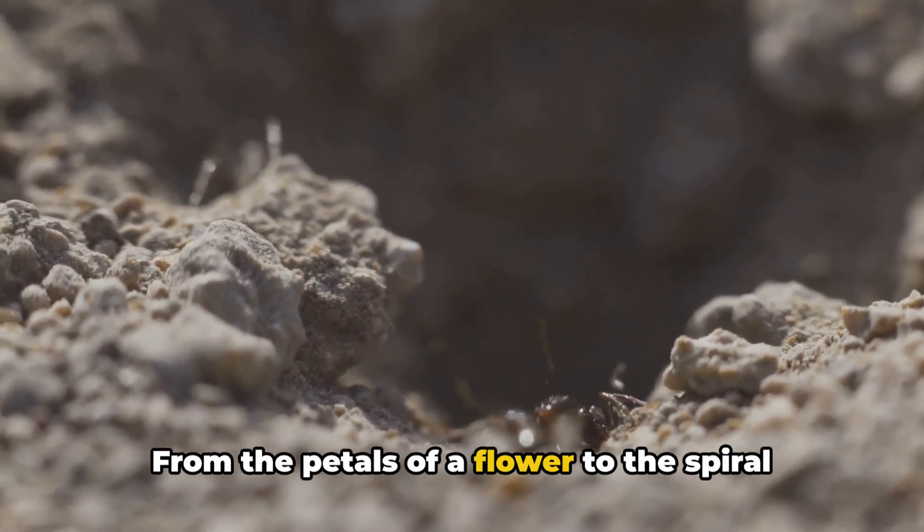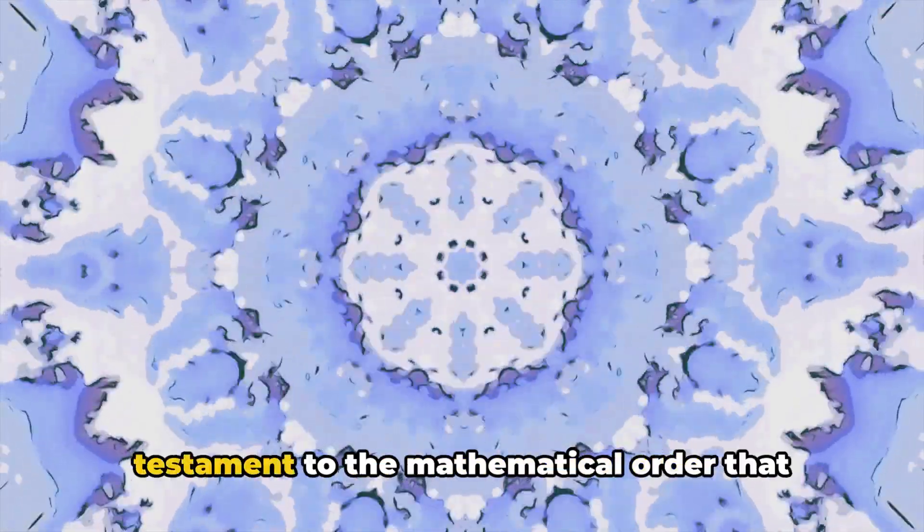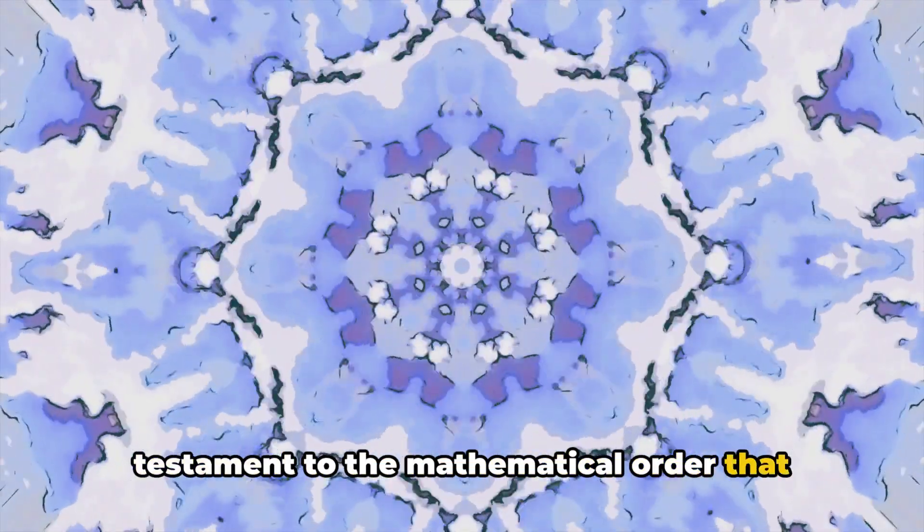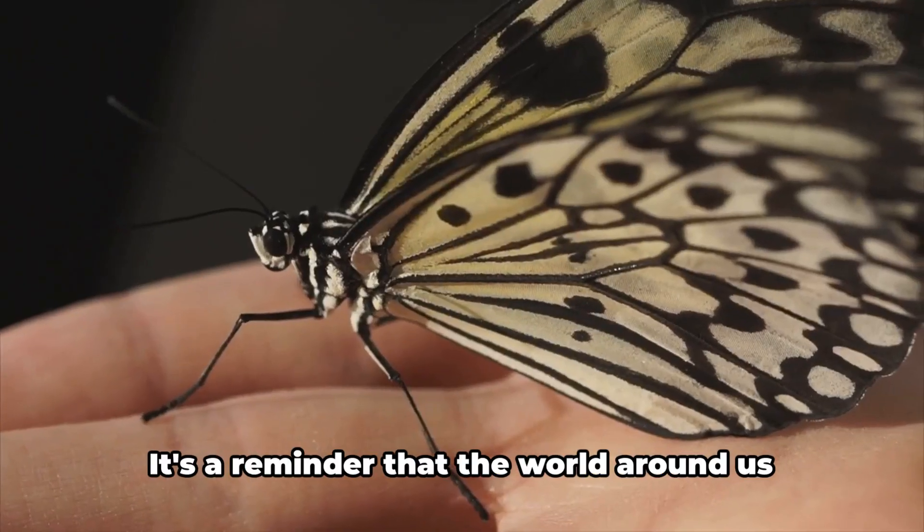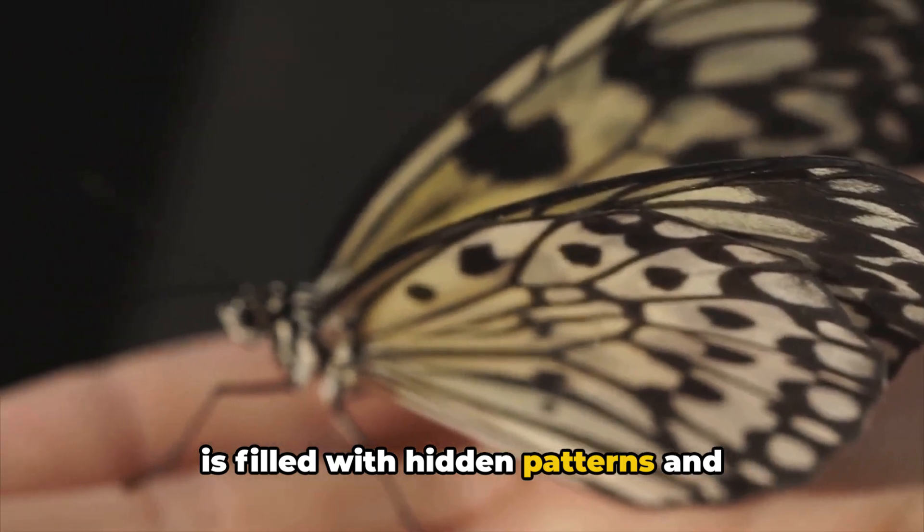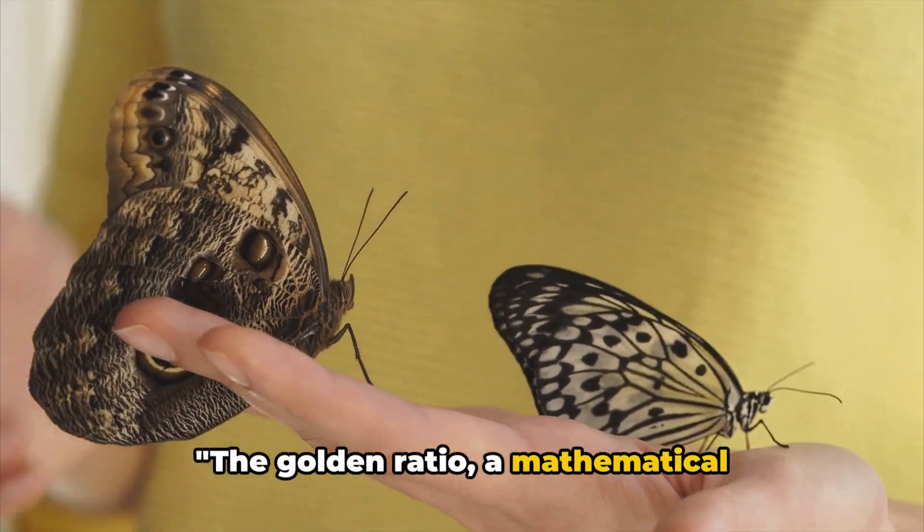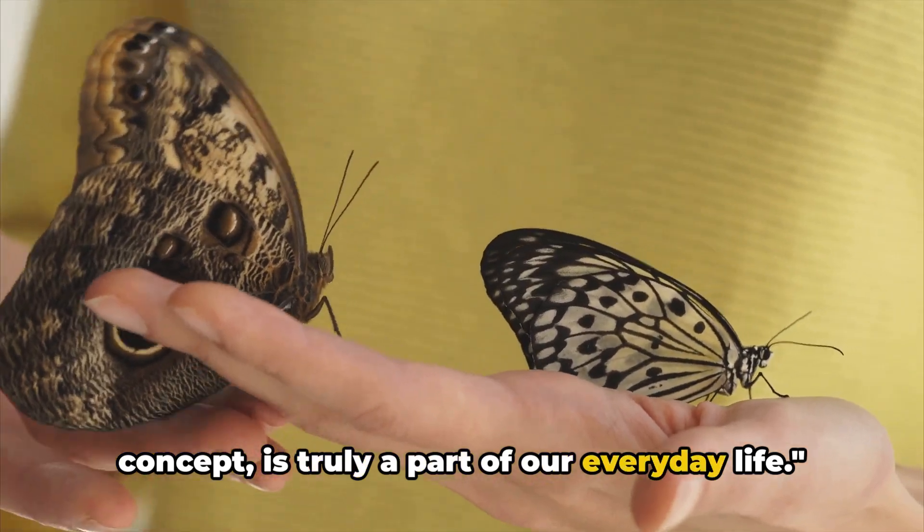From the petals of a flower to the spiral galaxies in space, the golden ratio is a testament to the mathematical order that underlies our universe. It's a reminder that the world around us is filled with hidden patterns and symmetries waiting to be discovered. The golden ratio, a mathematical concept, is truly a part of our everyday life.